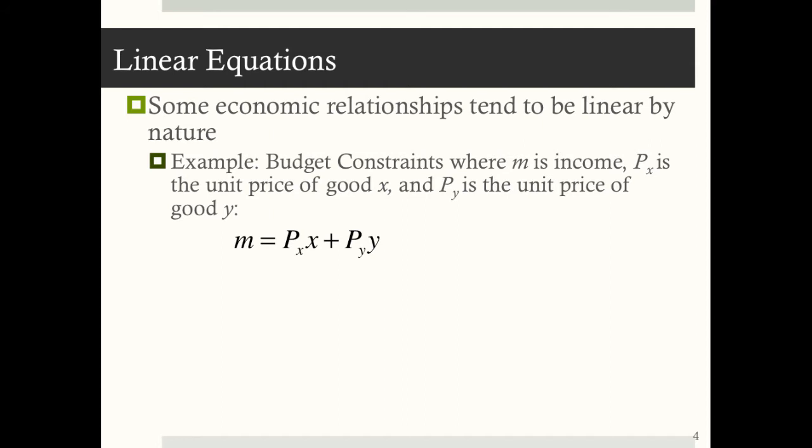And we can write budget constraints with m as income, p sub x as the unit price of a good x, and p sub y as the unit price of a good y. So what this equation is telling us is that all your money, m, your budget, your income is spent on the summation of what you spend on good x and what you spend on good y. And we can rearrange this and solve for y and graph this out. And we get our simple linear budget constraint.